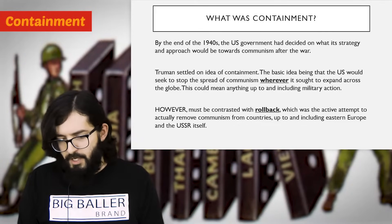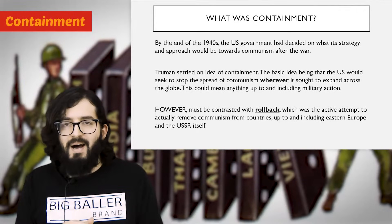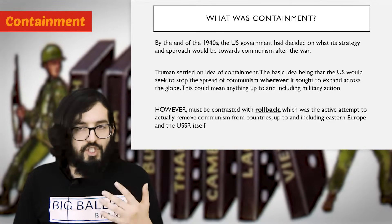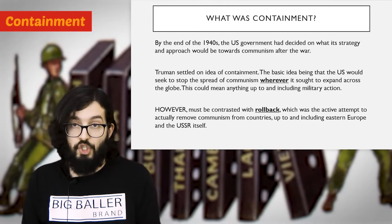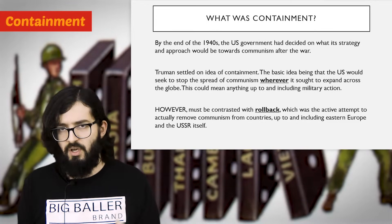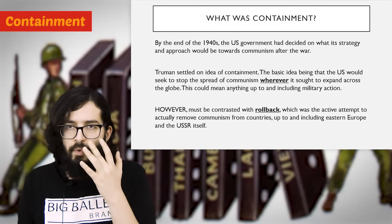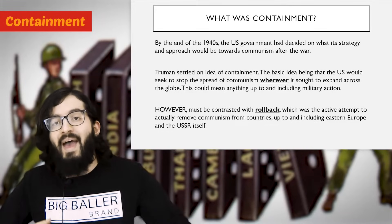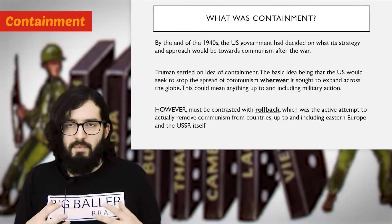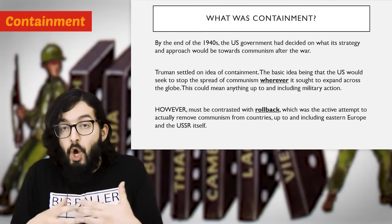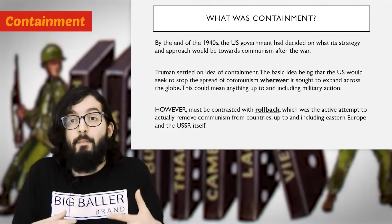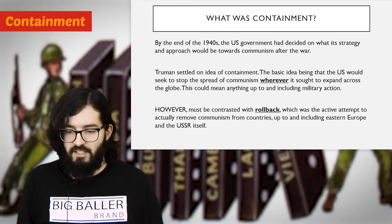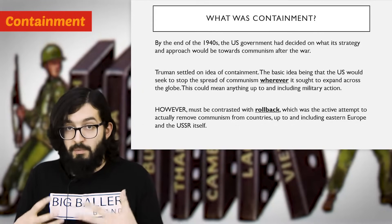Going back to containment: by the end of the 1940s, the United States government had decided on a new foreign policy strategy in response to the spread of communism across Europe and the world after the Second World War. Truman settled on this idea of containment — the basic idea being that the United States would seek to stop the spread of communism wherever it sought to expand. This could mean financially supporting governments, giving military assistance, or even sending US combat troops into countries to stop communist movements.